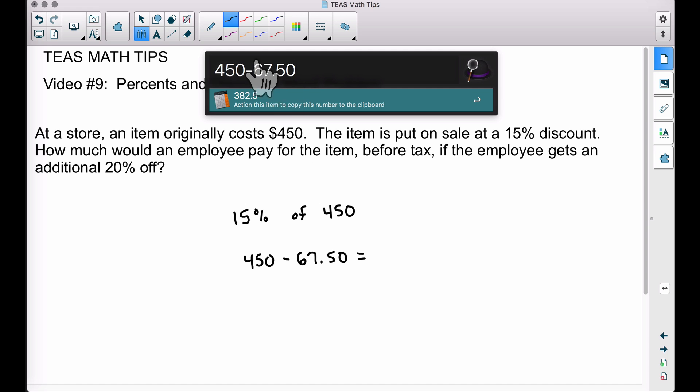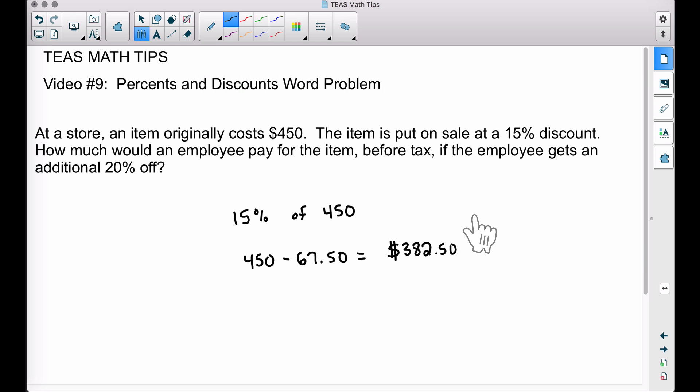So how much would we pay? Subtracting $67.50 from 450, we would pay $382.50.